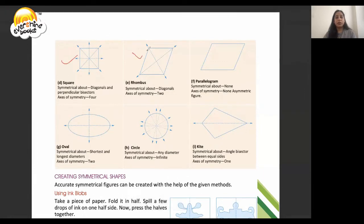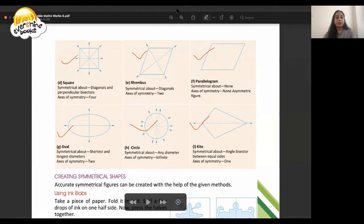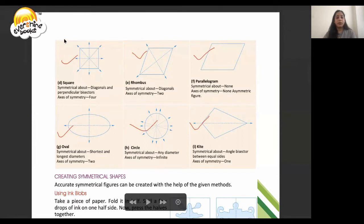Square, rhombus, parallelogram, oval, circle, and kite. Okay, let's see creating symmetry of creating symmetrical shapes.